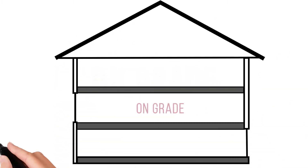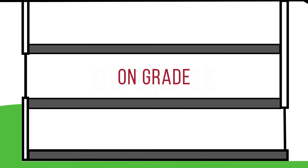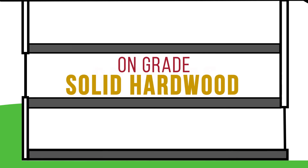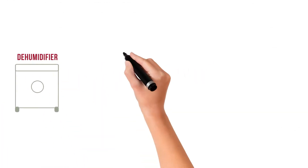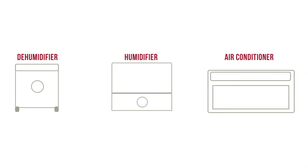The next one is on grade. On grade is the ground level of a home. While you are less likely to receive water damage, it's still important to know temperature conditions. Solid hardwood flooring tends to expand and contract in extreme heat or humidity conditions. Running a dehumidifier, humidifier, or the air conditioner will help to protect your floor.